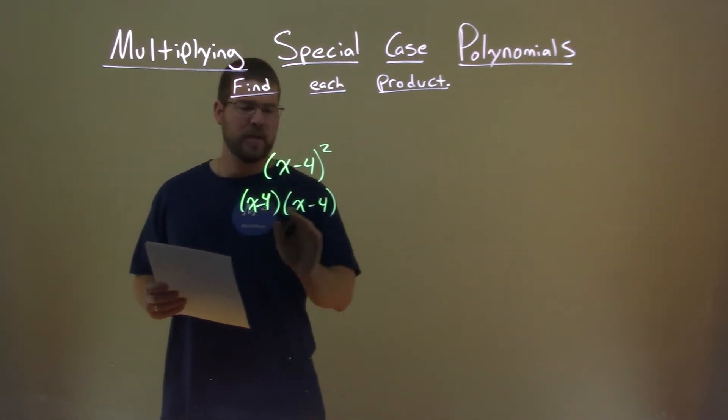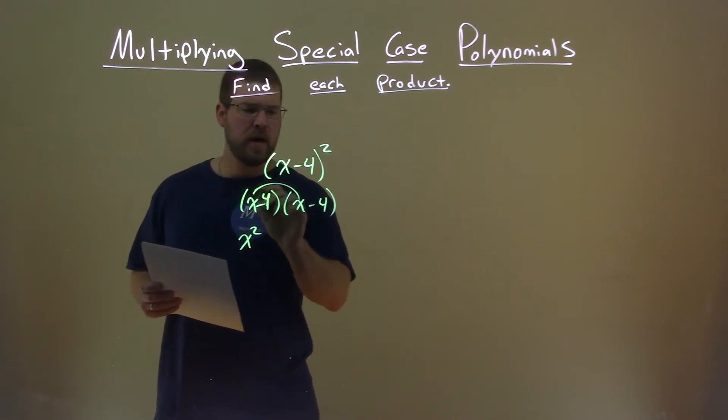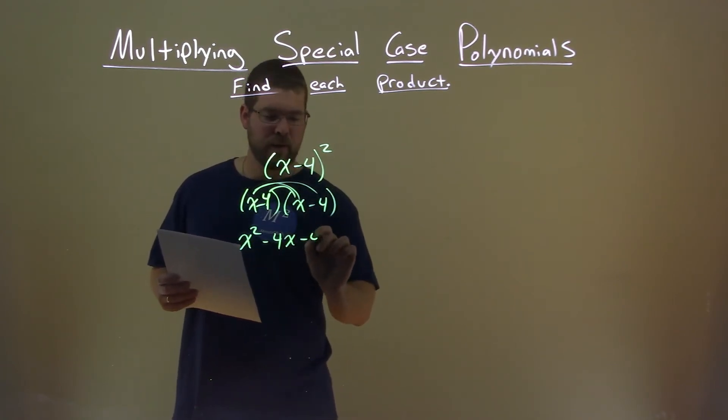Now, all parts need to be multiplied. x times x is x squared. x times minus 4 is minus 4x. Minus 4 times x is, again, minus 4x.